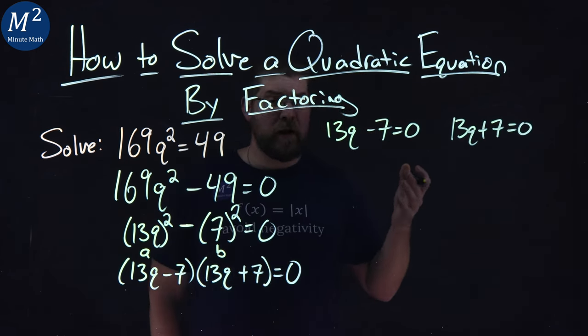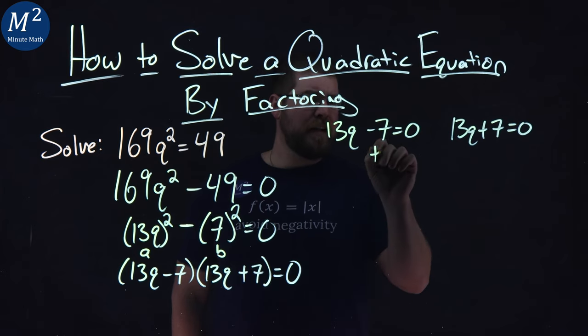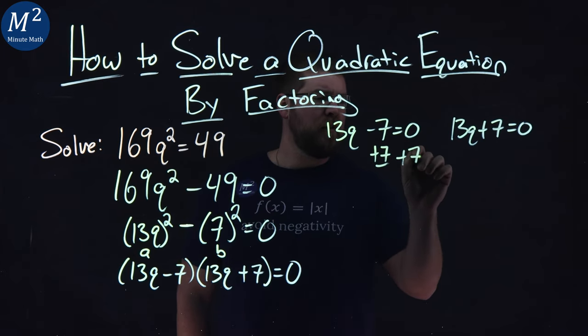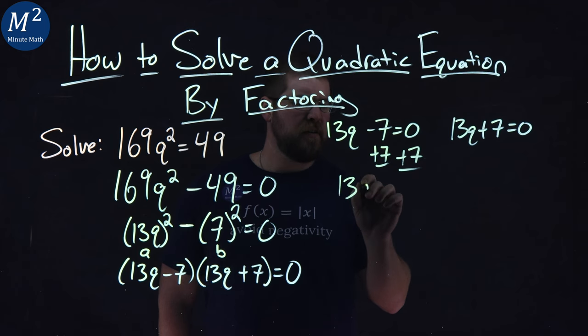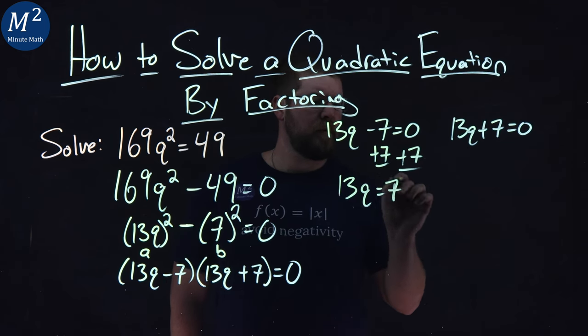Now, don't be afraid of fractions here, okay? We're going to add 7 to both sides. And don't feel like you need to write it as a decimal. 13q equals positive 7.